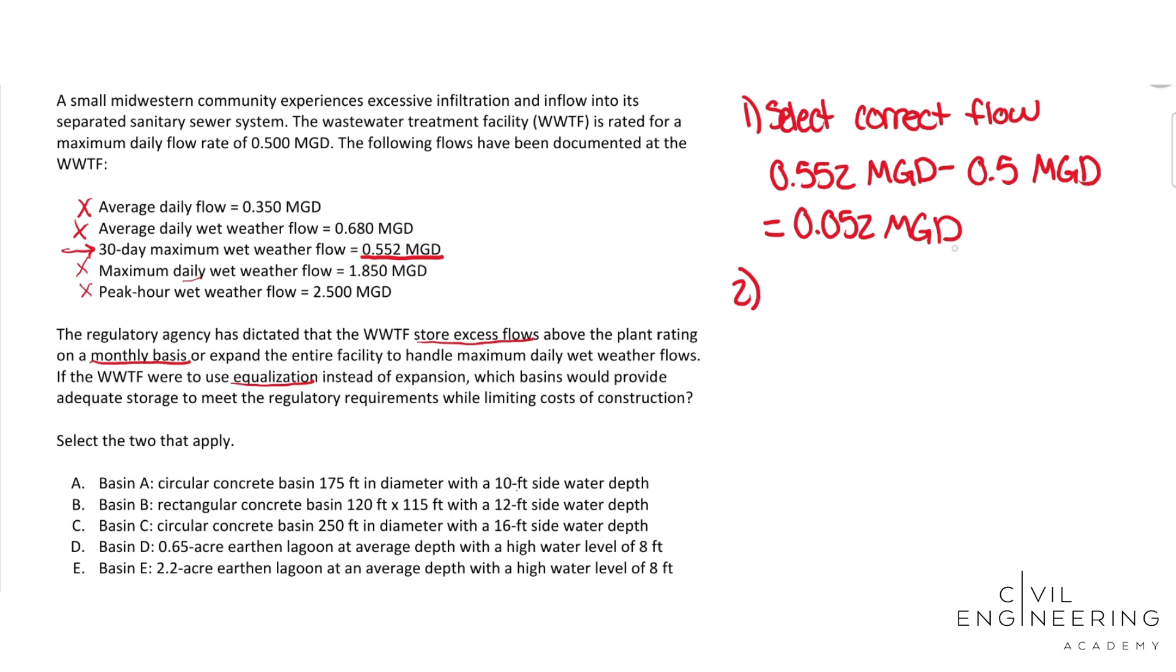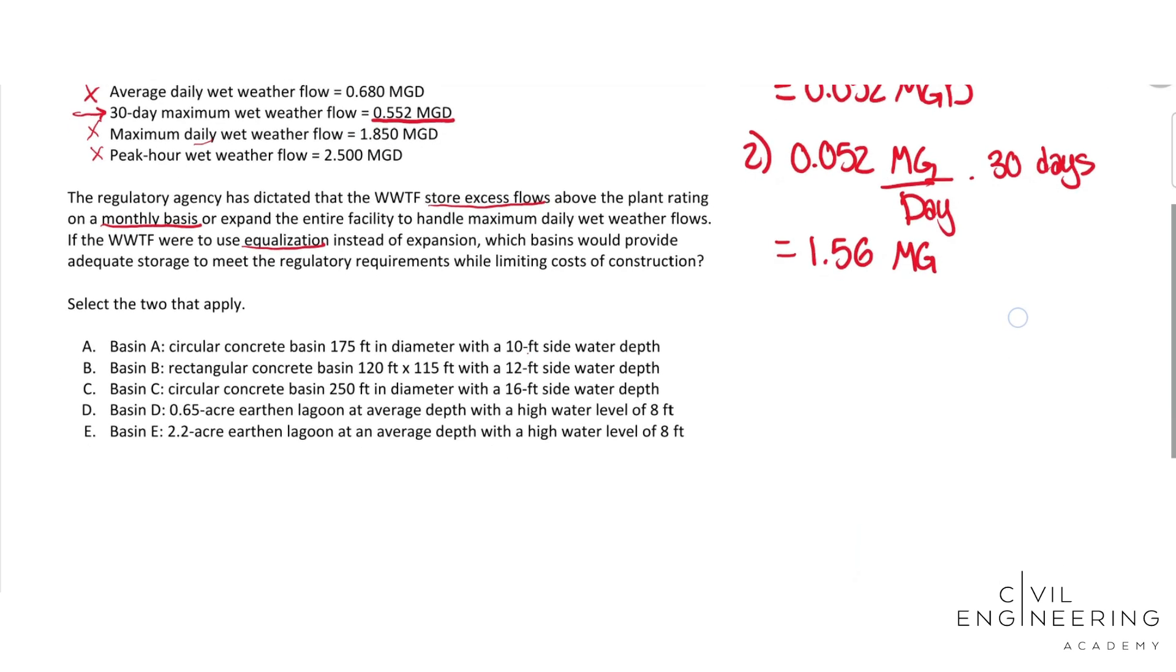Since all of our volumes are in feet, we're going to get cubic feet for our storage volume. So we will convert this MGD to feet cubed. We'll get 0.052 MGD per day, and that was on a 30-day maximum. So we'll multiply this by 30 days.